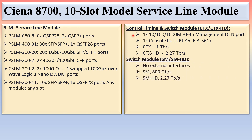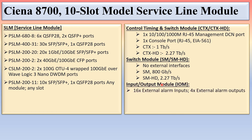The CTS has one RJ45 management DCN port and one console port. CTS capacity is 1 Tbps; CTSHD is 2.27 Tbps. The switch module (SM) has no external interfaces and switches up to 800 Gbps; SMHD has 2.27 Tbps capacity. The input/output module provides 16 external alarm inputs, 4 external alarm outputs, and two RJ45 ports for sync input and output.